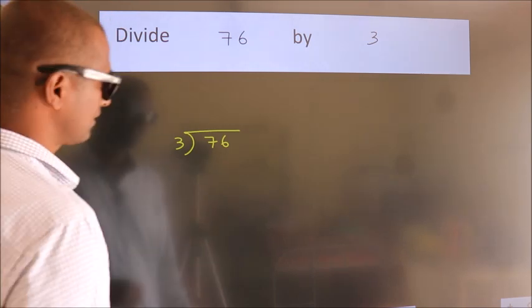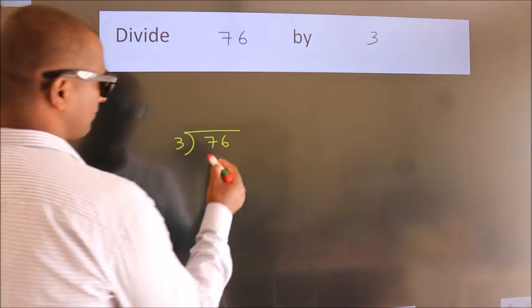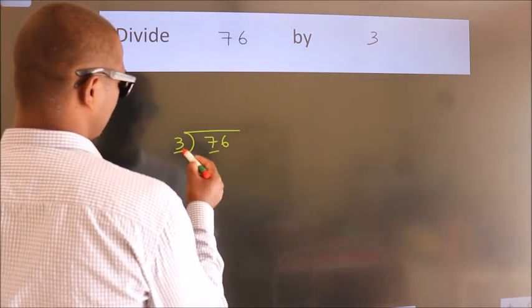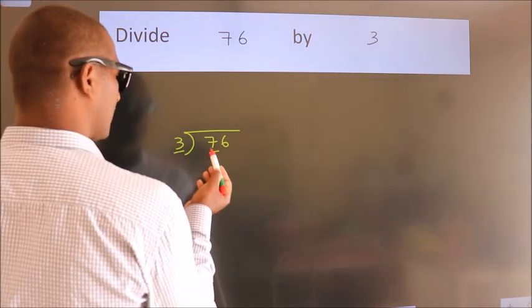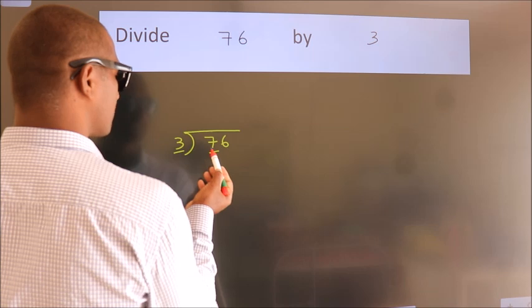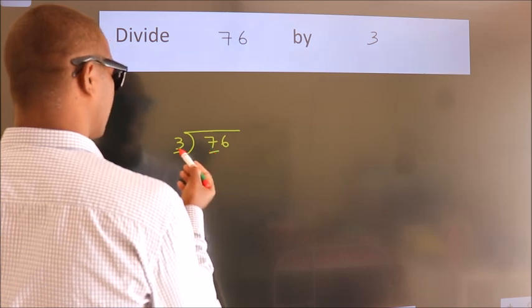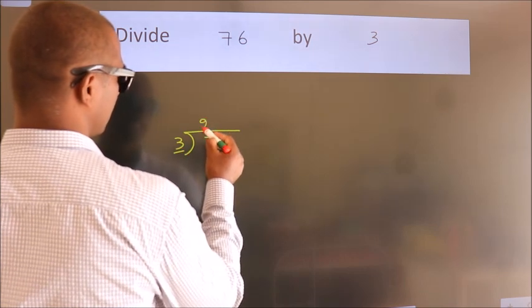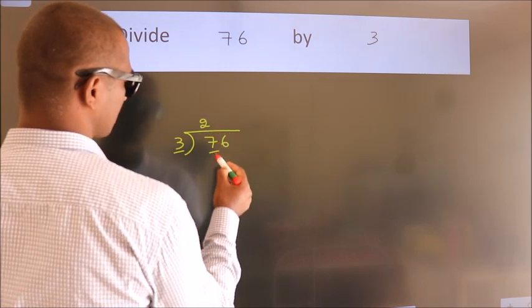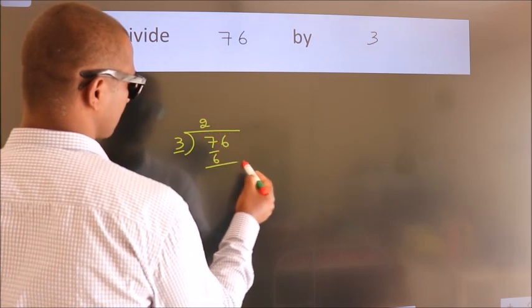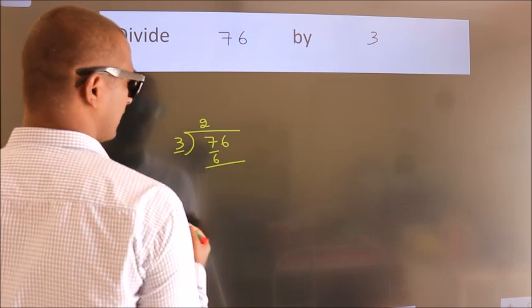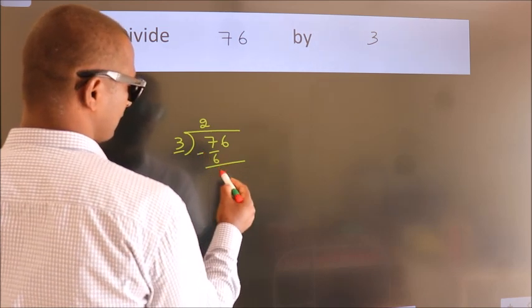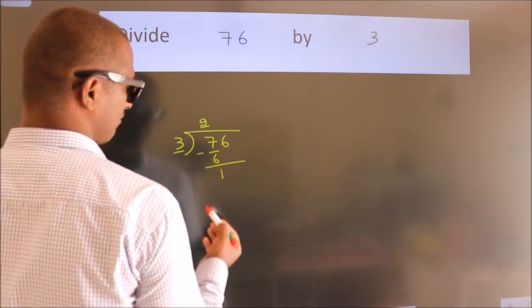Next, here we have 7 and here 3. A number close to 7 in the 3 times table is 3 twos are 6. Now we should subtract. We get 1.